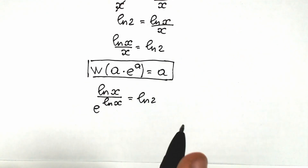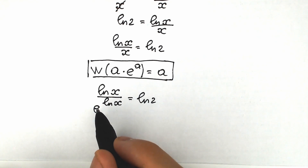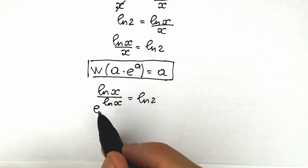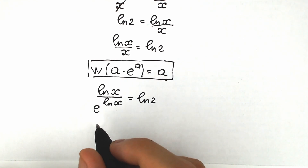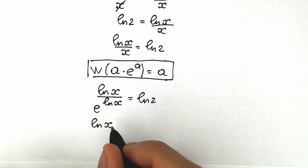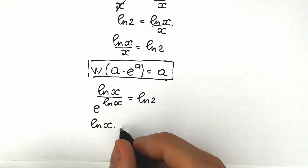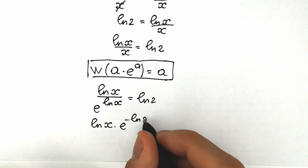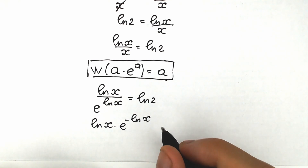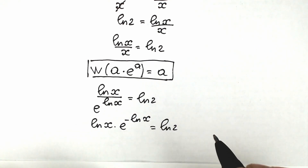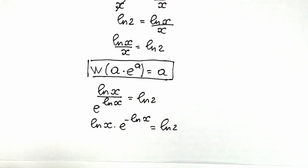Right now let's bring e to the power natural log x up to the numerator, but it will carry a minus sign because we're moving it from the denominator. So what we have right here is natural log x times e to the power minus natural log x equal to natural log 2.